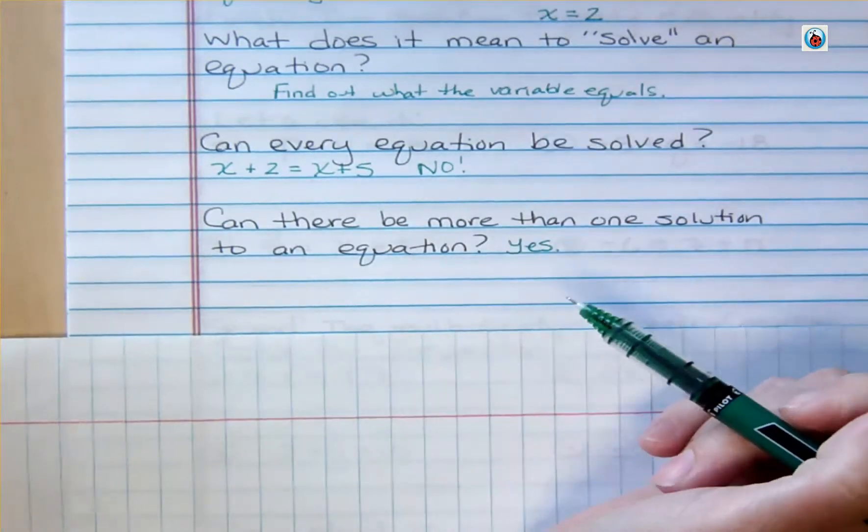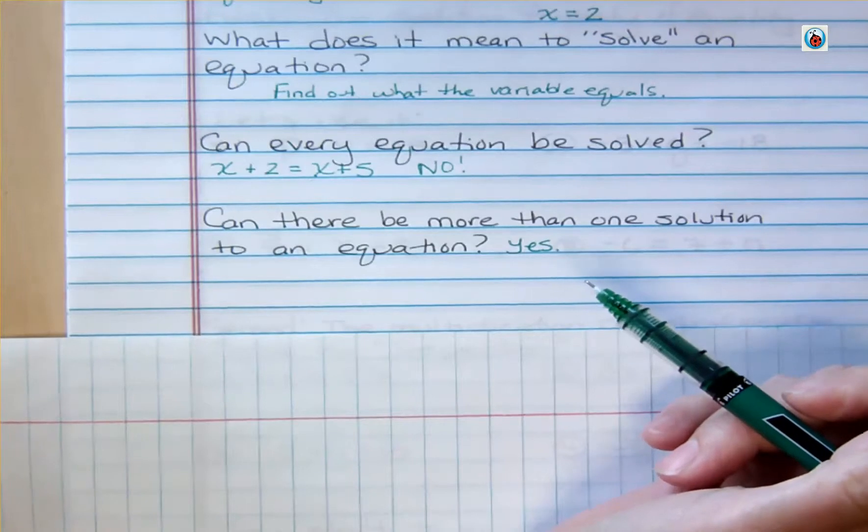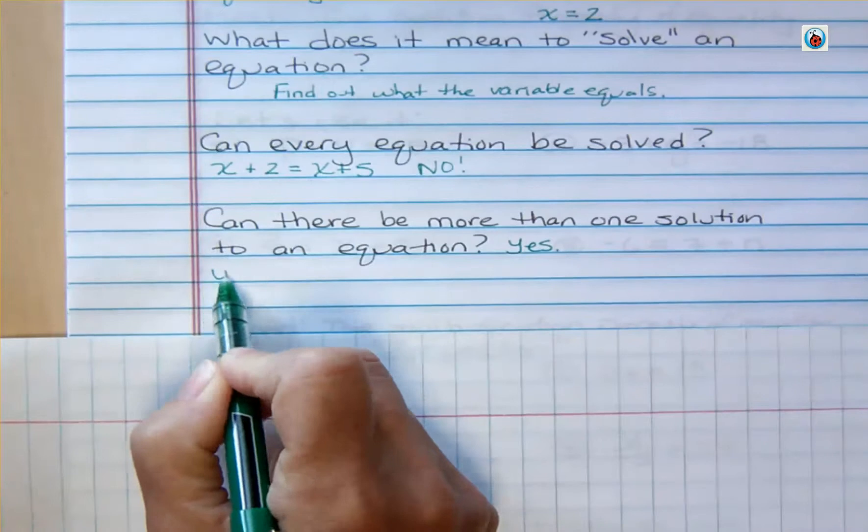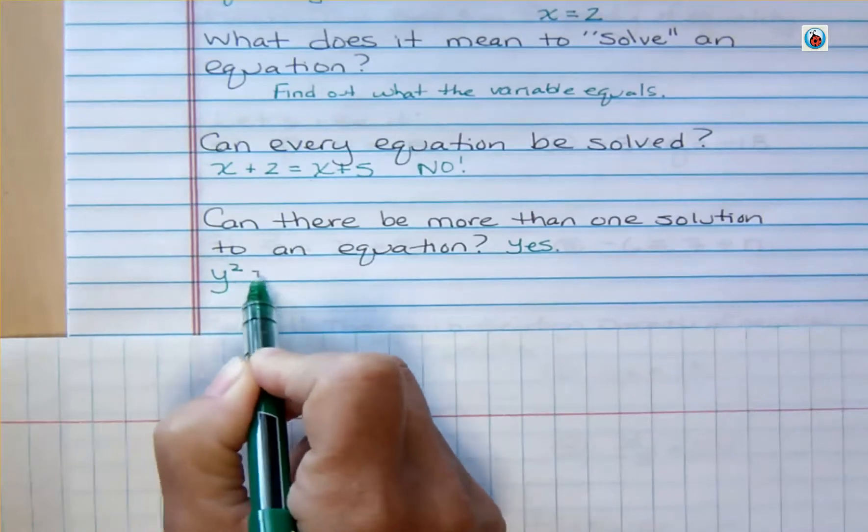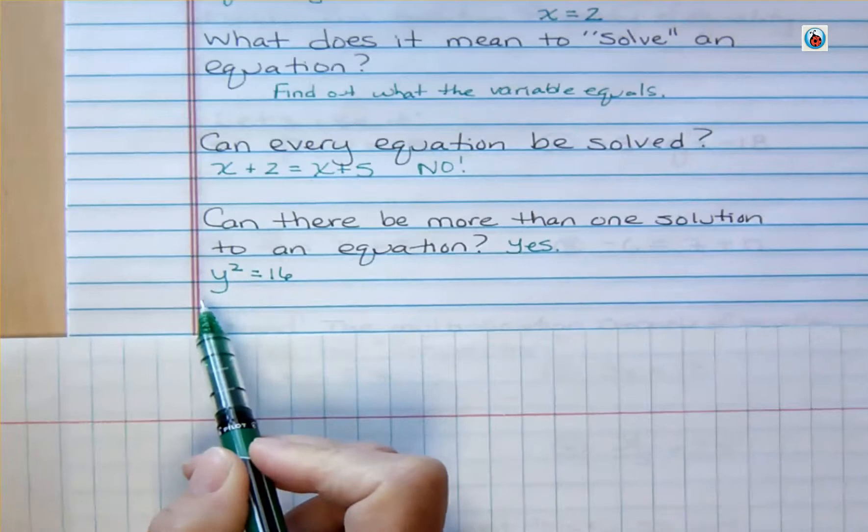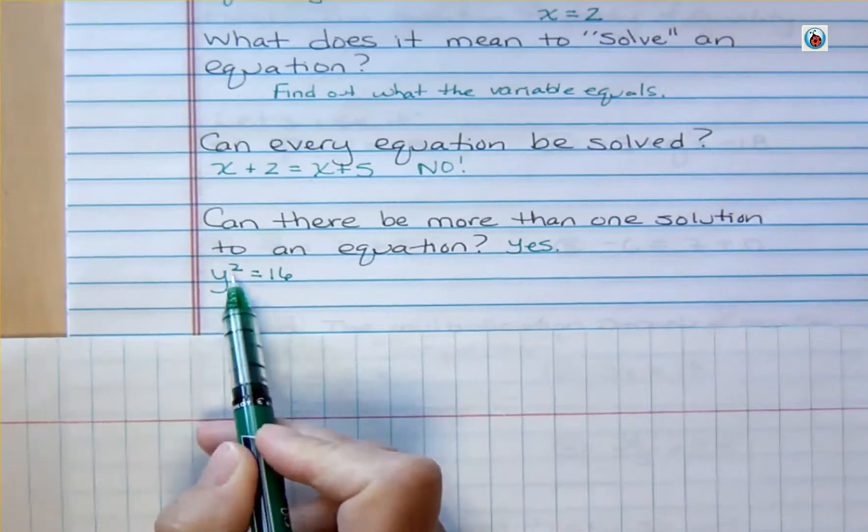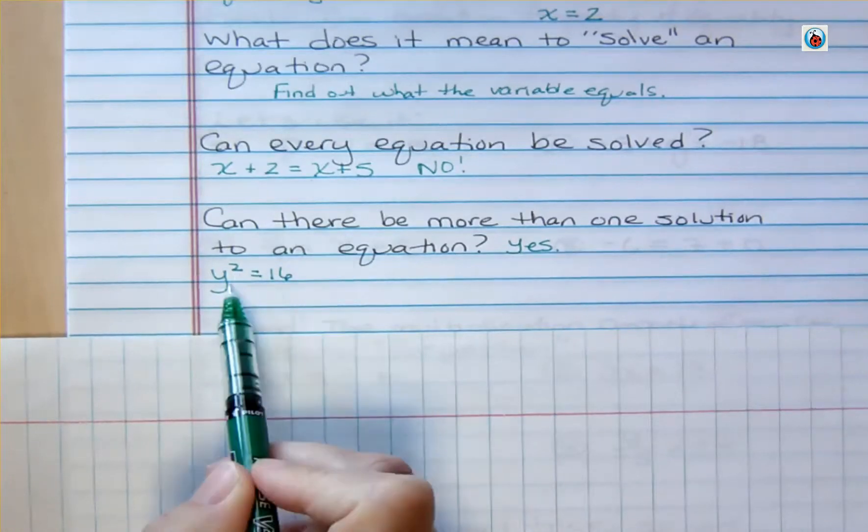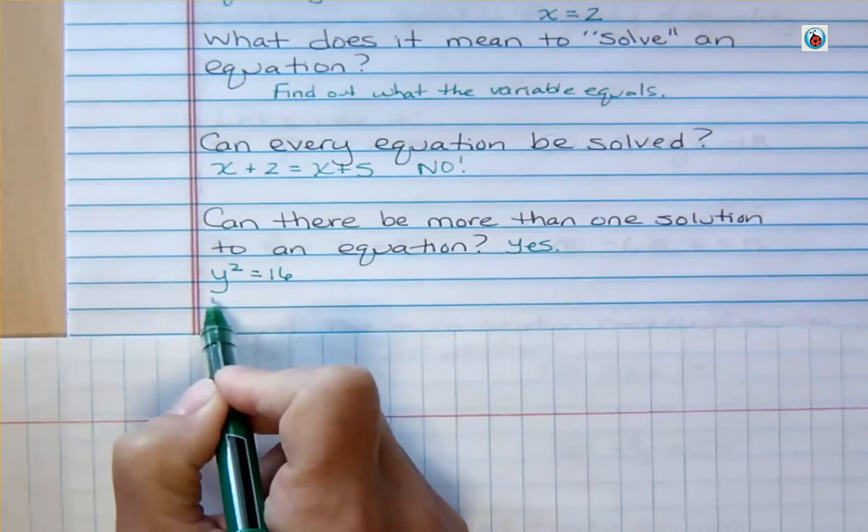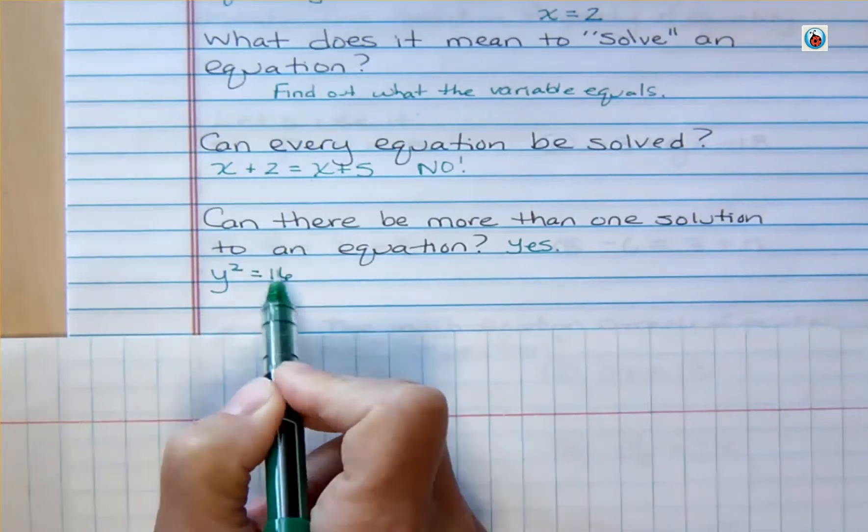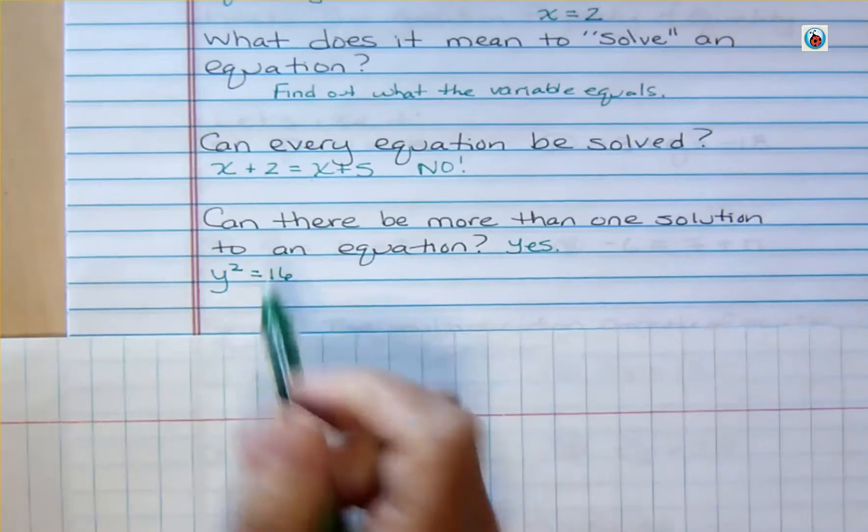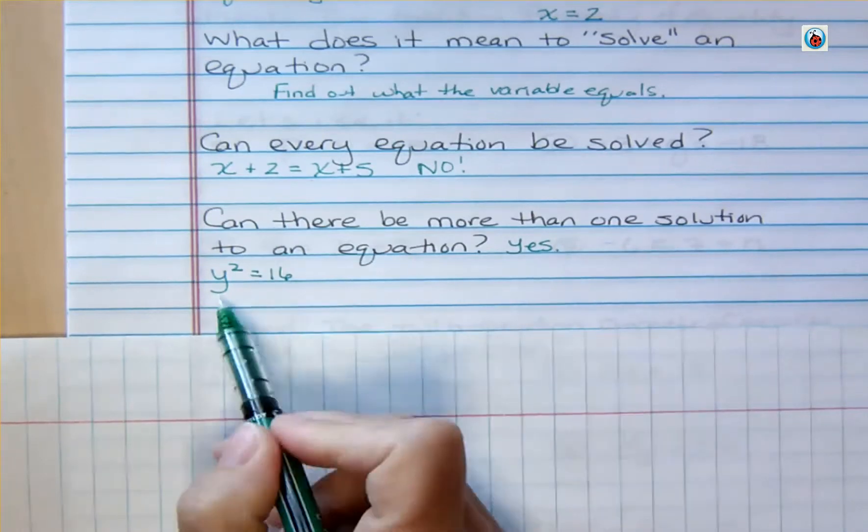When you have something to a first power, you expect one solution to that equation. But if you had something to the second power, let's say you had y squared equals 16. Well, now that's not a linear equation anymore. That's to the second power. That's called quadratic, which we'll deal with in another class. But that could have two solutions, because it's true that 4 to the second power is 16, but also negative 4 to the second power is 16. So that kind of an equation, yes.